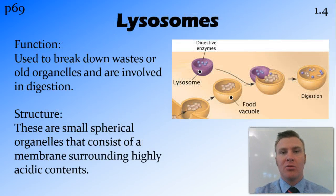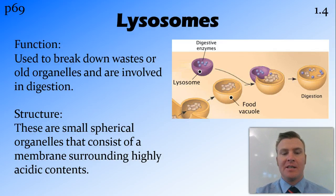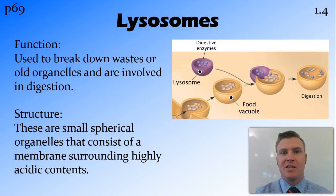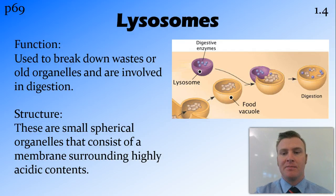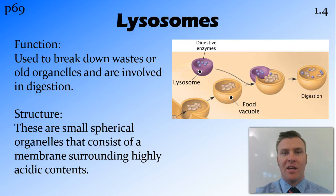Lysosomes are small circular organelles that have very acidic contents inside them, and these are used for digestion inside the cell — cellular digestion — as well as to break down wastes. A lysosome comes and merges with a vacuole that contains food and digests the substances in that vacuole.